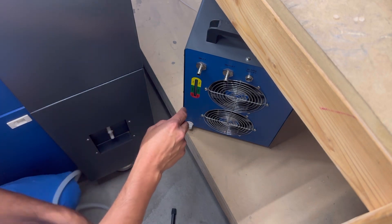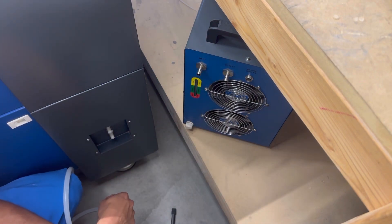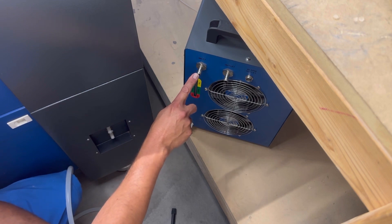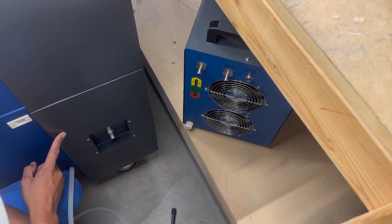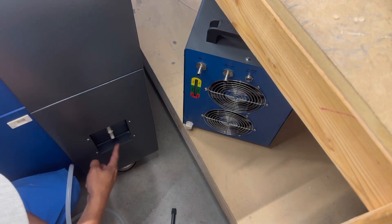So if you look down at the chiller, this is the back of the CW5200 from OM Tech. You have your inlet and outlet. On your CO2 laser, this is the OM Tech 24 by 40, 100 watt. You have your inlet and below that is the outlet.